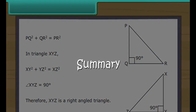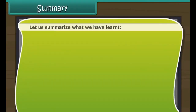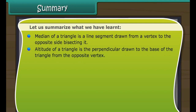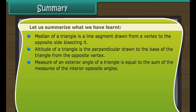Summary. Let us summarize what we have learned. A median of a triangle is a line segment drawn from a vertex to the opposite side bisecting it. The altitude of a triangle is the perpendicular drawn to the base of the triangle from the opposite vertex. The measure of an exterior angle of a triangle is equal to the sum of the measures of the interior opposite angles.